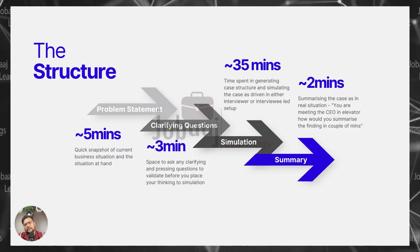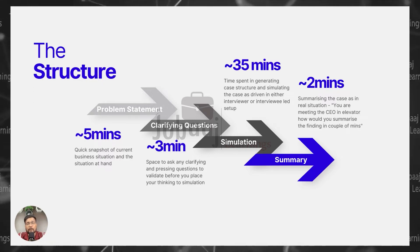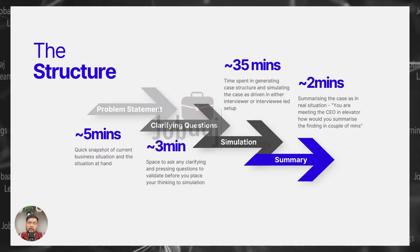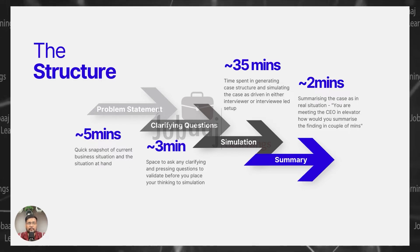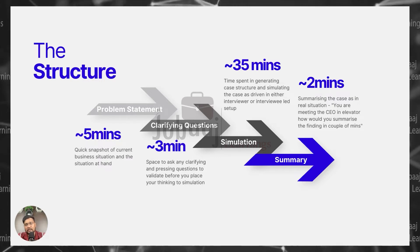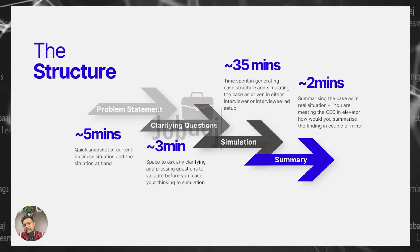The very first five minutes would actually be spent talking about the problem statement. At this stage the problem statement would be very narrow and you would be given some perspective about what exactly is the business situation. You need to ensure that you have understood the problem right. The interviewer will set the stage and give you the prompt. Once that is given, you need to ensure you are taking notes and then paraphrasing the same problem statement back to them.